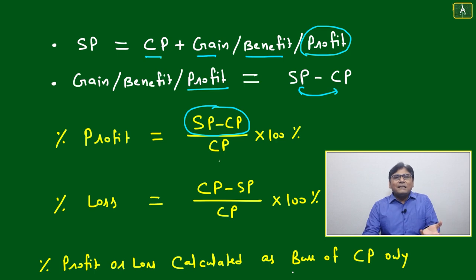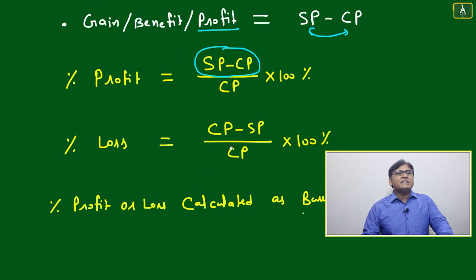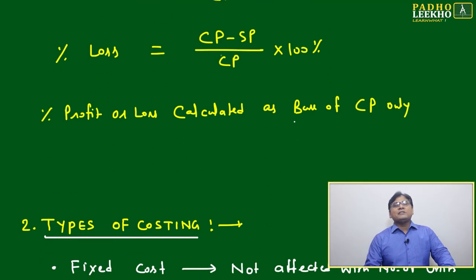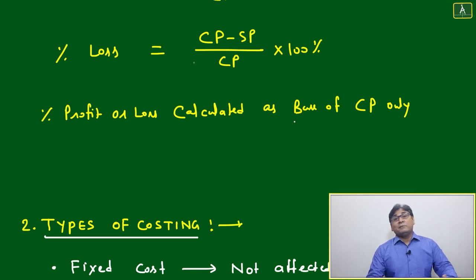That is called profit. Profit percentage is the amount you gained with respect to your investment or with respect to your cost price. That is called percentage profit. Percentage loss, you can just make reverse. If your cost price becomes higher than selling price, then you are making the loss.